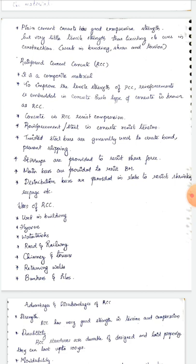In RCC, concrete resists compression while reinforcement or steel resists tension. Twisted steel bars are generally used to create a bond and prevent slipping between concrete and steel.